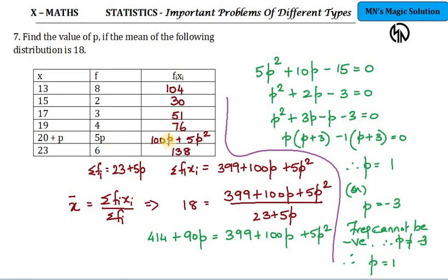The two multiply I get two terms here. So 100p plus 5p squared are the two terms. And when I add everything together I get three terms: 399 plus 100p plus 5p squared, totally three terms I get. In sigma fi, I get two terms: 23 plus 5p. Numericals separately add, final variable separately add.